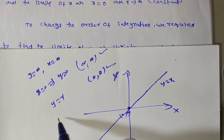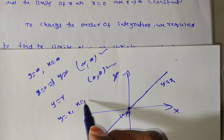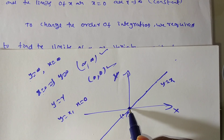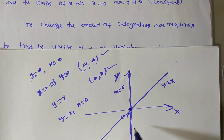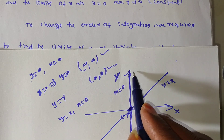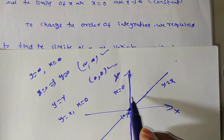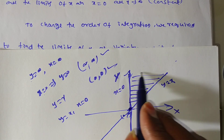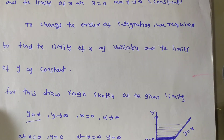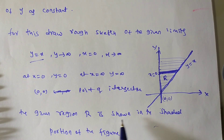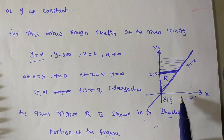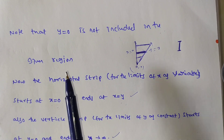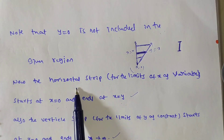The line x = 0 is the y-axis. Starting from (0,0), we shade the region between the y-axis and the line y = x. The shaded region is our region of integration. Note that y = 0 (the x-axis) is not included in the given region.